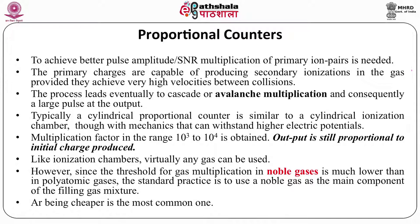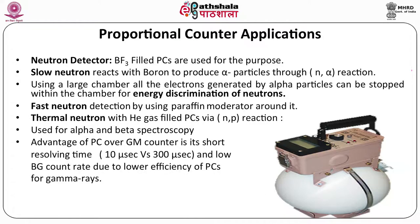The output in terms of charge or current is still proportional to the initial charge produced. Like ion chambers, virtually any gas can be used; however, since the threshold of gas multiplication in noble gases is much lower than in polyatomic gases, standard practice is to use a noble gas as the main component of the filling gas mixture. Argon, being cheaper, is the most common gas used in proportional counters.